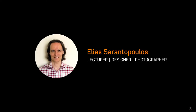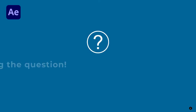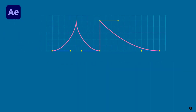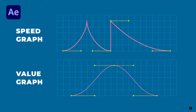Hello and welcome, I am your host Elias Sarantopoulos. This time around in After Effects I will be answering the question: how to use the Speed and Value Graph to smooth your animations over time inside the Graph Editor.